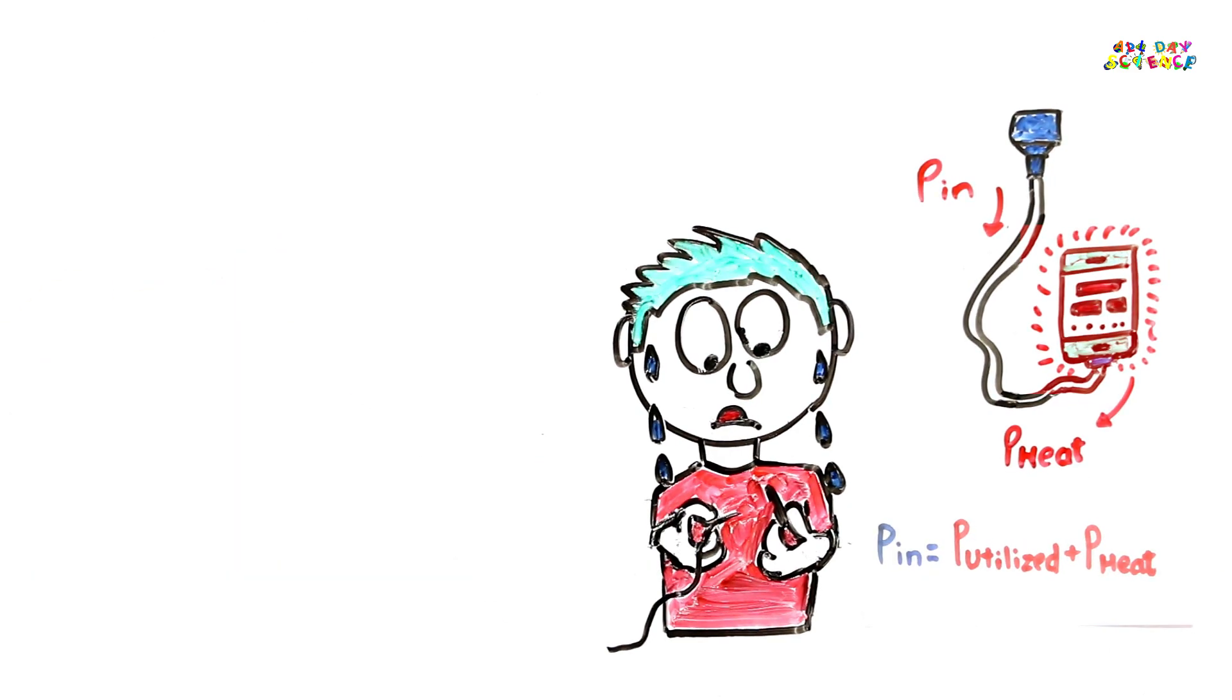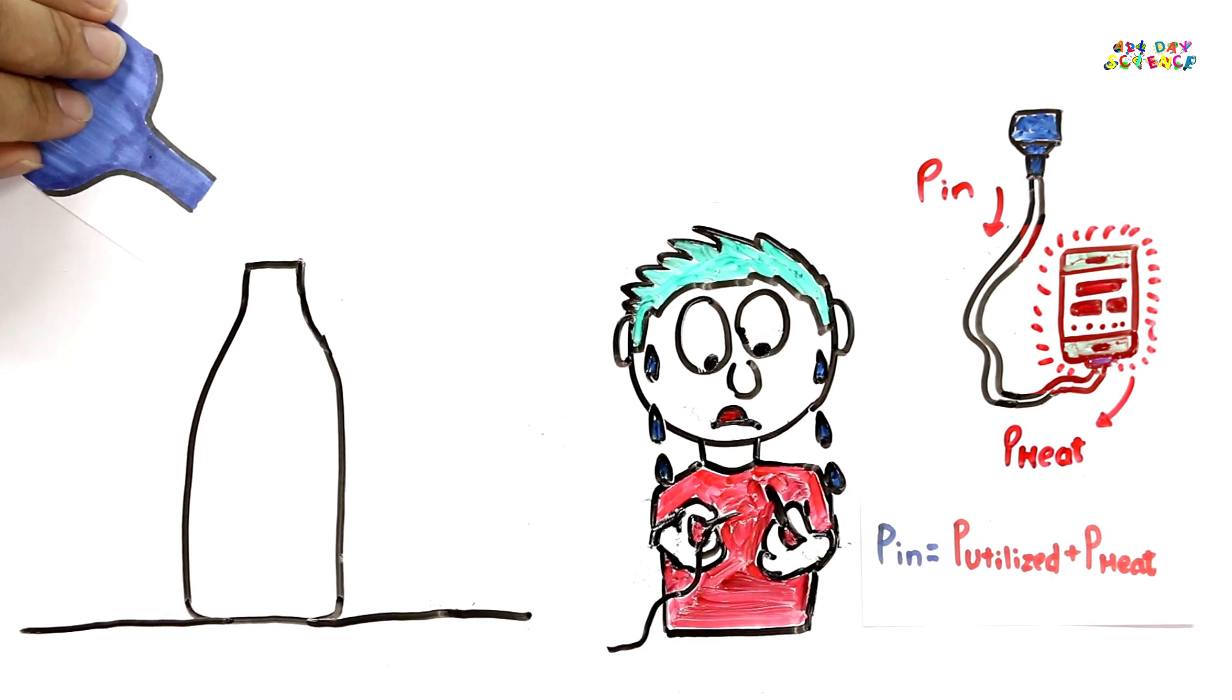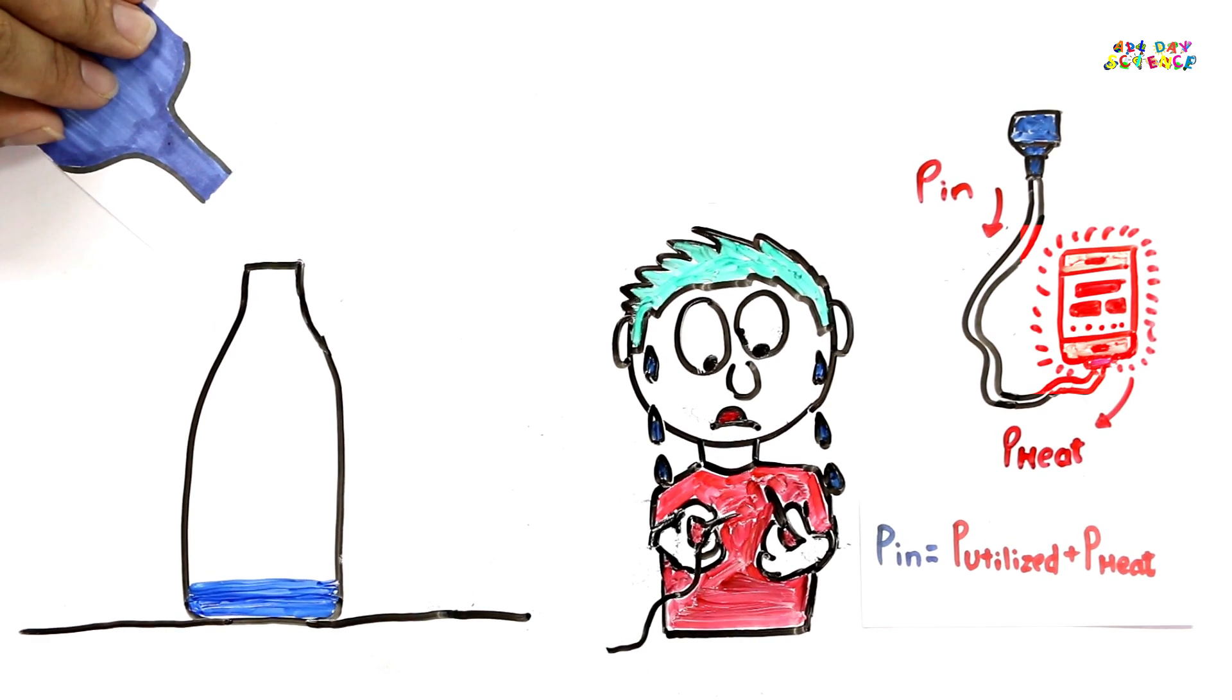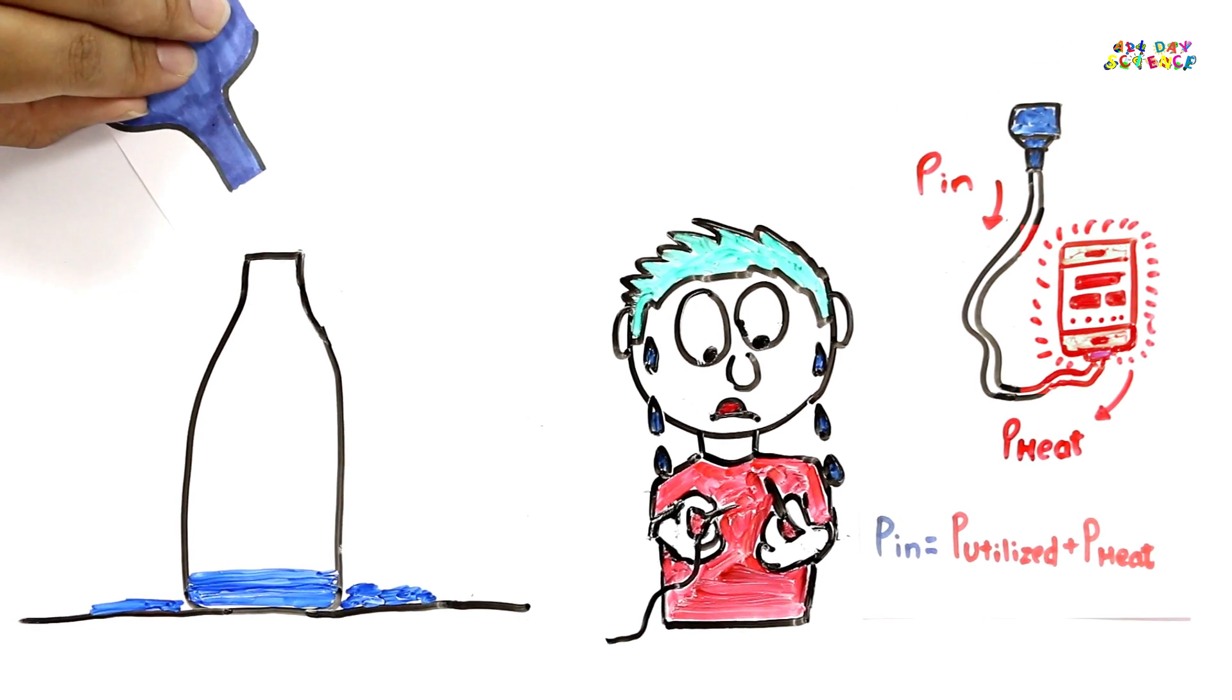Imagine it in this way: you have one bottle completely empty with capacity 1 liter, and you are filling it at the rate of 0.1 liters per minute. But in this process, due to some human error, you spill some water outside.